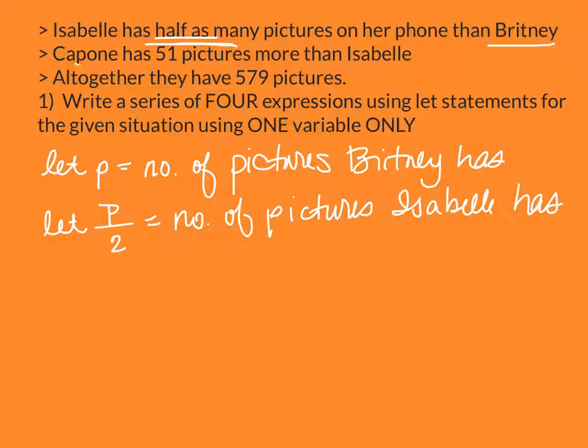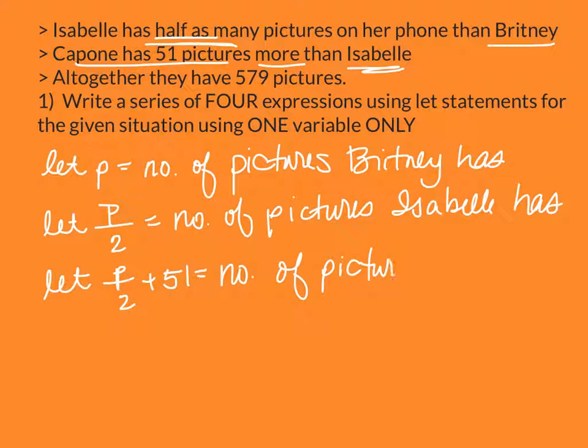And then finally, Capone has 51 more than Isabel. So we go back and Isabel has P divided by 2. So we're going to start with that, P divided by 2. And Capone has 51 more. More means add 51, and that equals the number of pictures that Capone has.